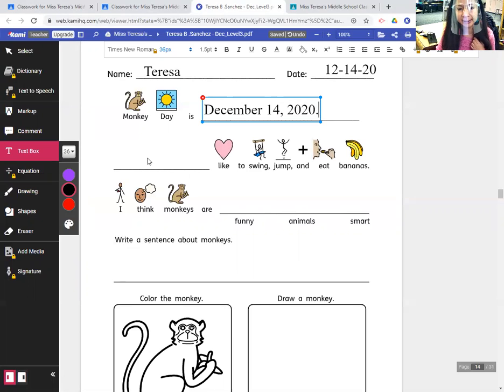Okay, blank likes to swing, jump, and eat bananas. Who or what likes to swing, jump, and eat bananas? Monkeys. So I'm going to write the word monkeys in the blank: M-O-N-K-E-Y-S.